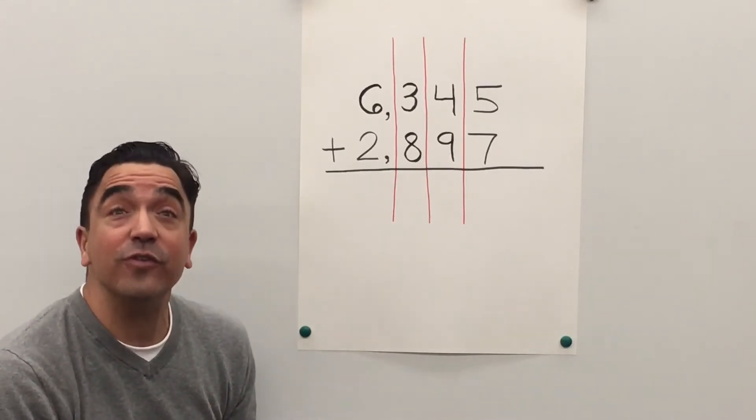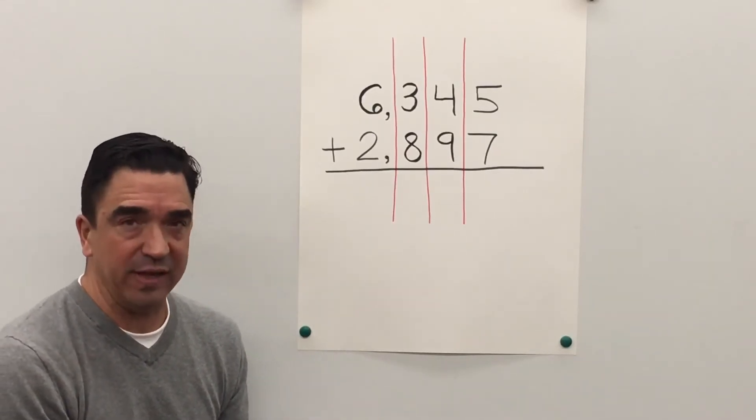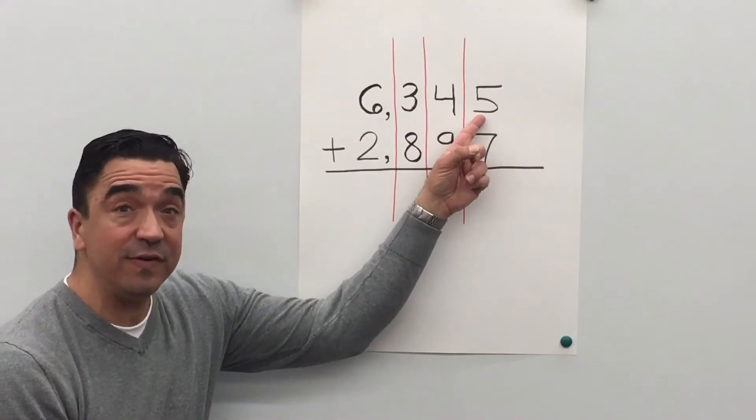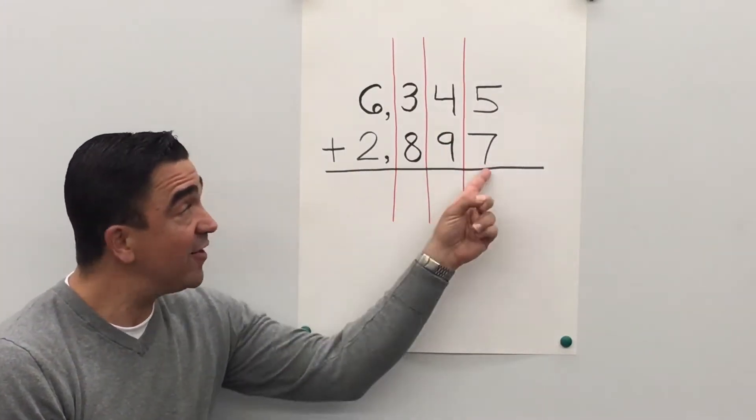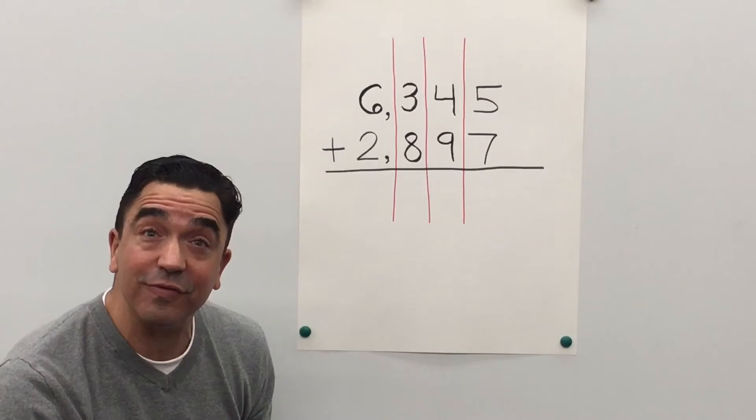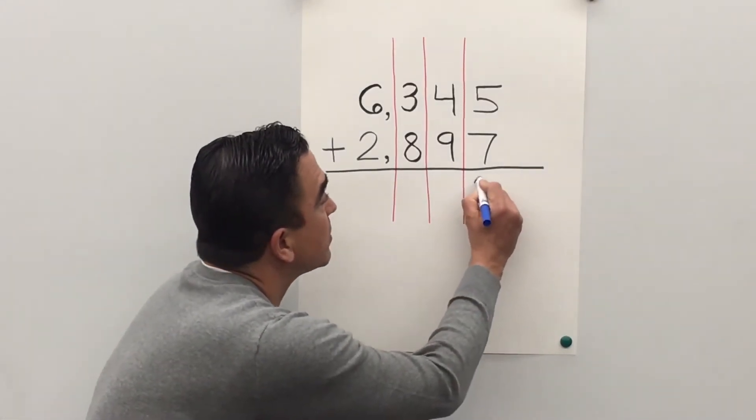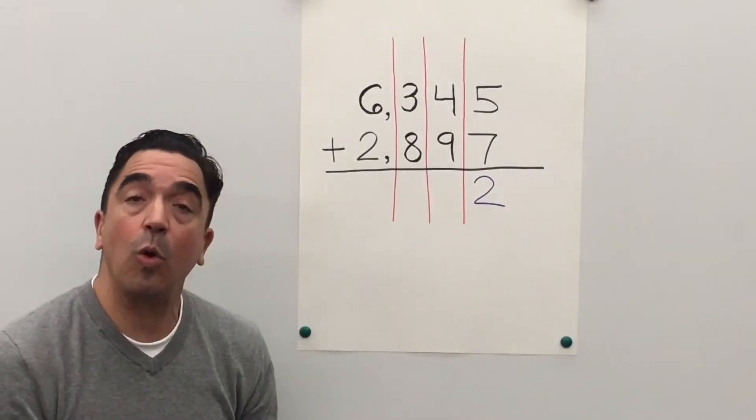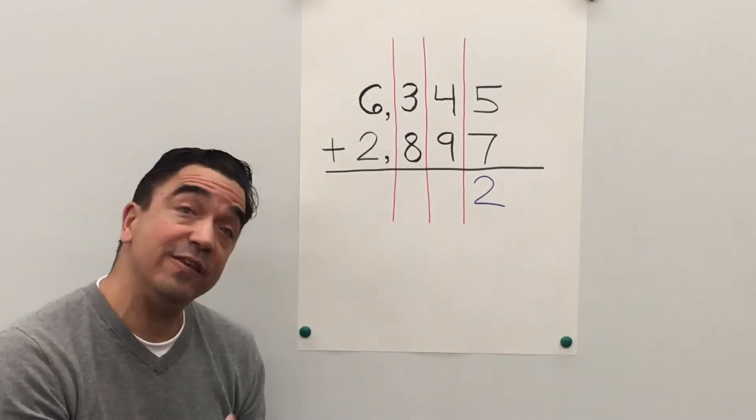Well, let's start in the ones place. 5 plus 7 is 12. We're going to regroup our one into the tens place.